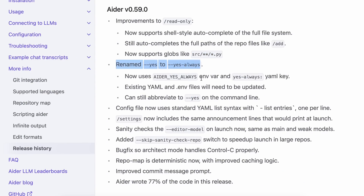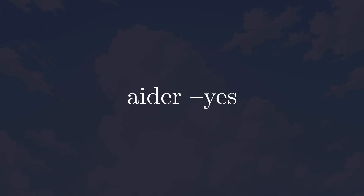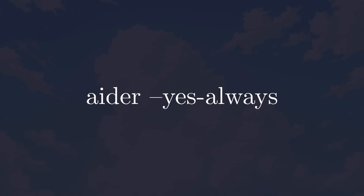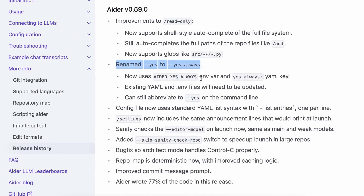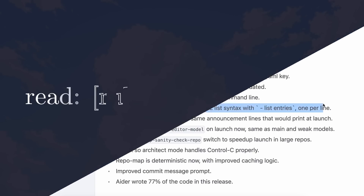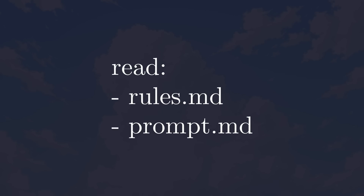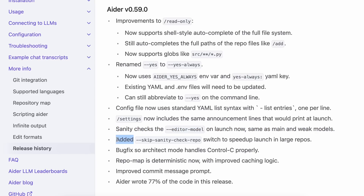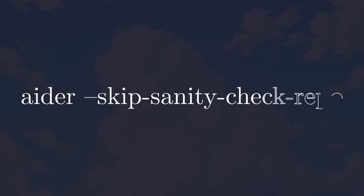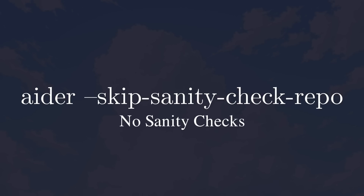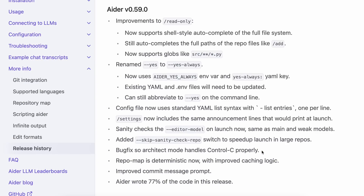The Yes operator has also been renamed to Yes Always. Basically, if you start Aider with this option, you won't need to approve anything and it will automatically approve actions. The config file also now supports standard YAML list syntax, so you can list items without using brackets — just add a dash and the items you want, and it will treat it as a list. It now also does sanity checks on the editor model at launch, and there's a new skip sanity check for repos, which skips sanity checks for large repos. This is helpful if you use Aider in large repos, as sanity checks can take some time.